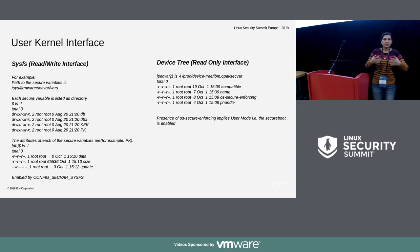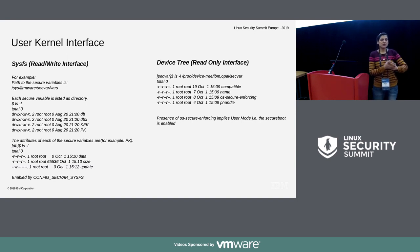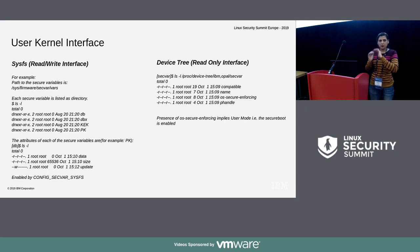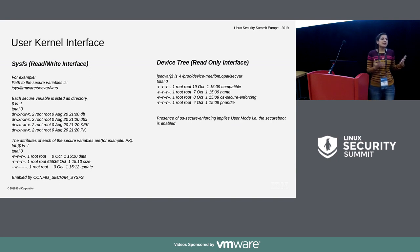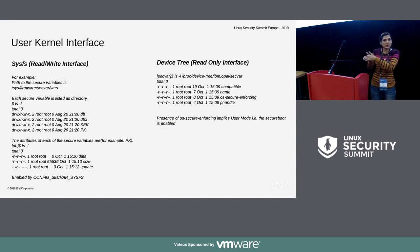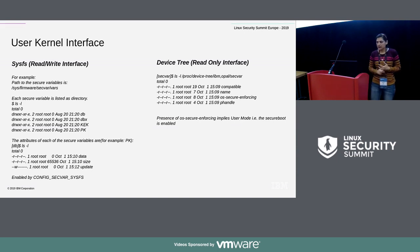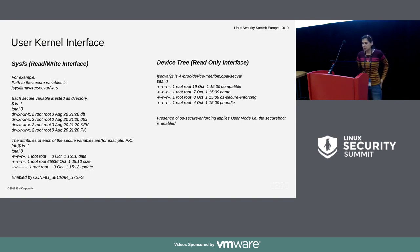There are two interfaces exposed as part of the kernel. One is device tree — the read-only properties of the internal key management status are exposed via device tree. The OS-secure-enforcing property (under the secvar node) tells whether secure boot is enabled or disabled. The second interface for submitting keys is a read-write sysfs interface which allows reading or writing of keys, exposed via sys/firmware/secvar/vars. It can be enabled by CONFIG_SYSFS. The patches for it are work in progress which we are trying to get upstream.